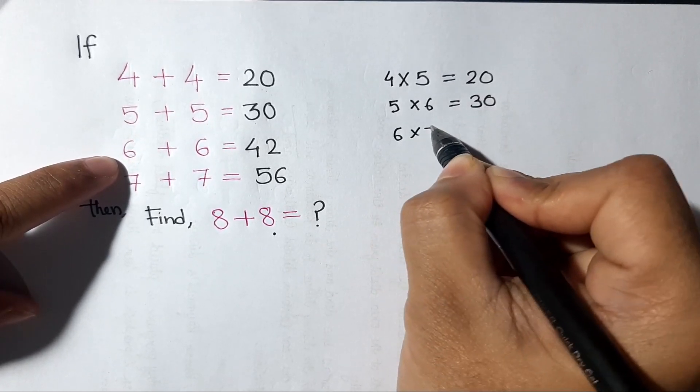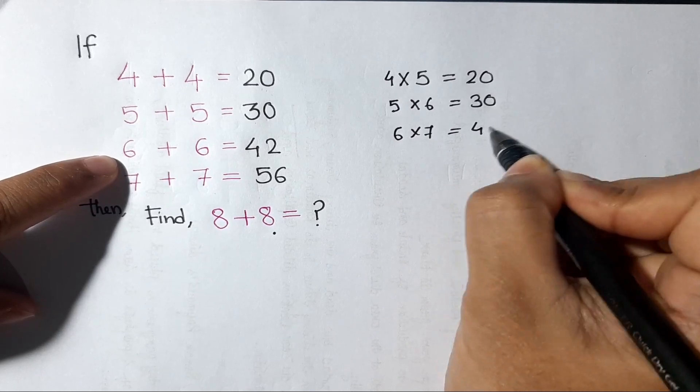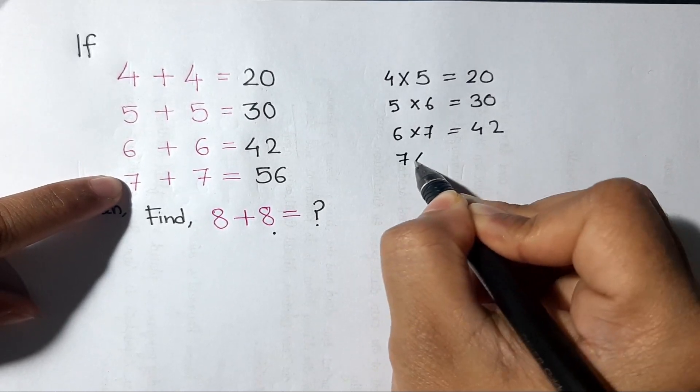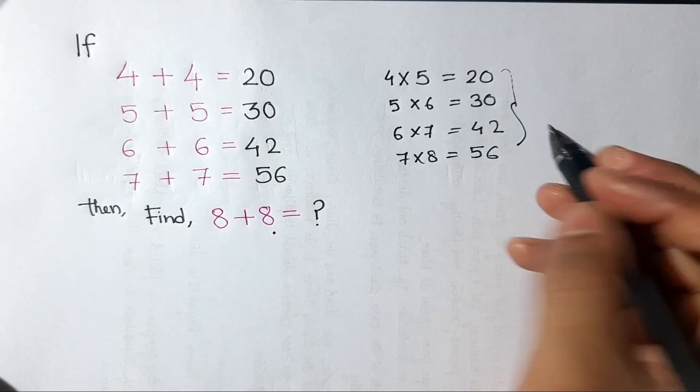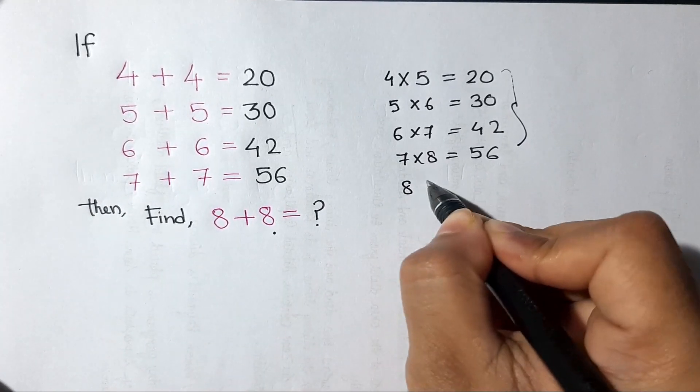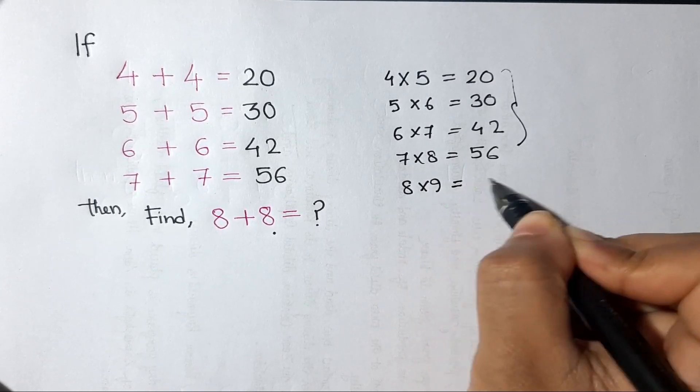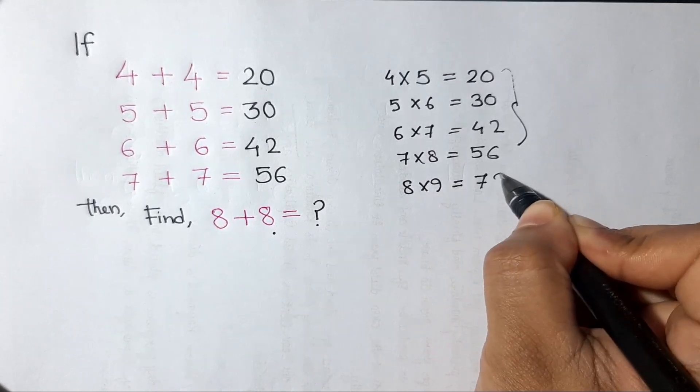7 with 8, we will get 56. So this is the logic behind it - we have to multiply 8 with 9, and the answer is 72.